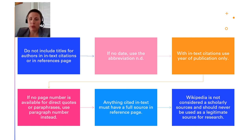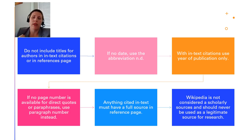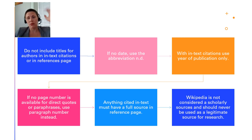Finally, Wikipedia is not considered a scholarly source and should not be used as a legitimate source for research. You can start there — go to Wikipedia, see what they have to say, and follow the links typically included after the article to begin your research. But do not cite Wikipedia in your references page or in your paper. If you do, I will return the paper and give you a couple of days to fix it.